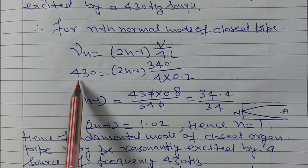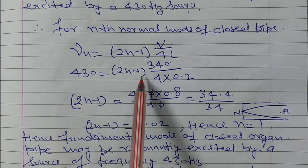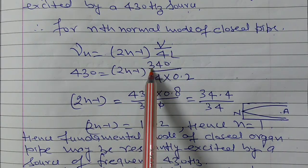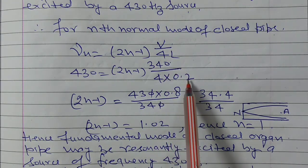430 source which is closed organ pipe resonant, so this νn is equal to 430, and this 2 into n minus 1, and the speed of sound is given 340 upon 4, the length of the pipe is 0.2 meter.